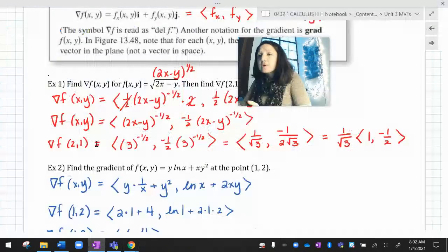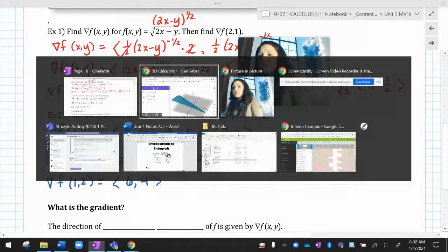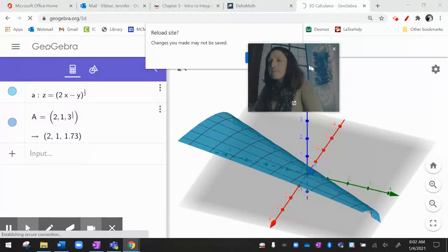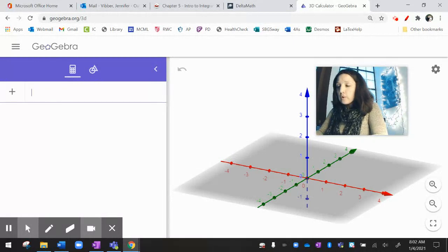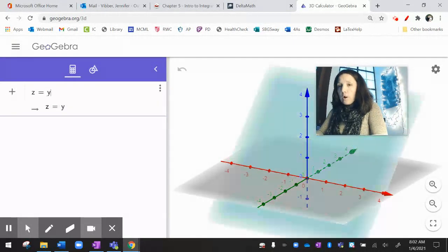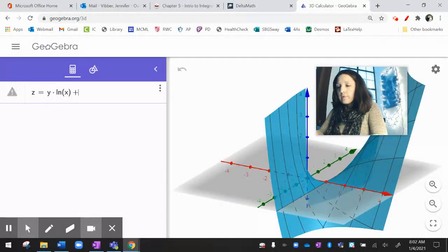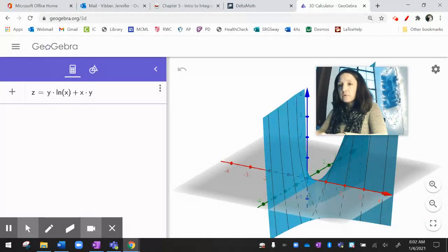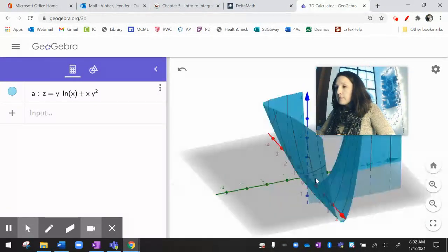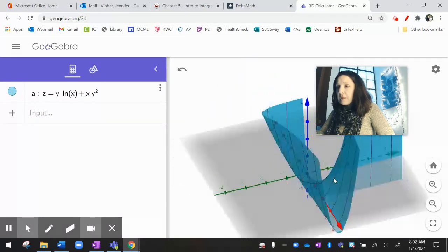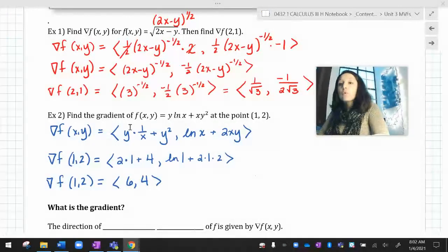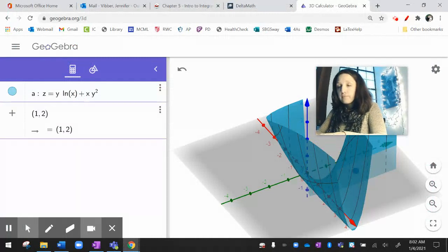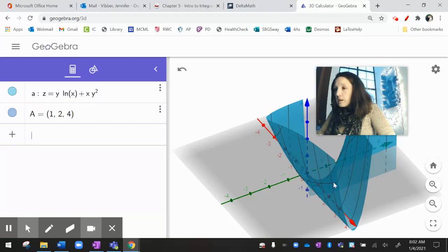Now, what if I switch to that other function, the other function being y ln x, xy squared. So if I have y ln x plus xy squared, I get this cool looking thing. I like it. And this one, we were at the 0.1, 2. So at the 0.1, 2, this would be 0 plus 4 would be 4. So the 0.1, 2, 4. And let's see.